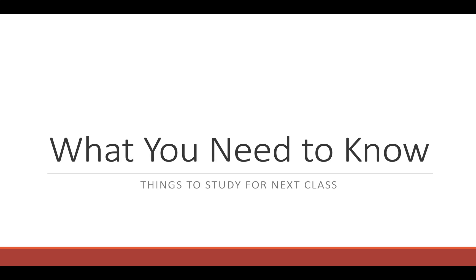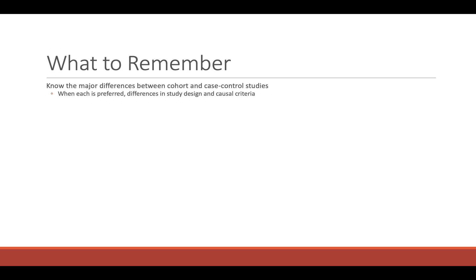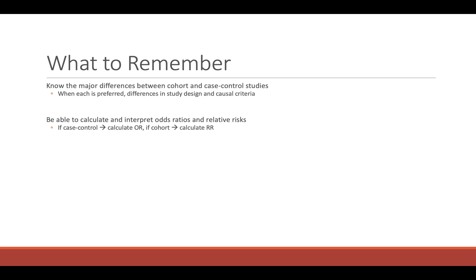So what do you need to know — things to study for the next class. First, know the major differences between cohort and case control studies: when each is preferred, differences in study design, and causal criteria. Be able to calculate and interpret odds ratios and relative risks. Remember: if it's a case control, you calculate an odds ratio; if it's a cohort, you calculate a relative risk.